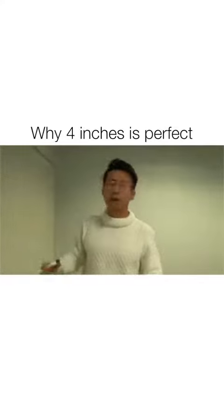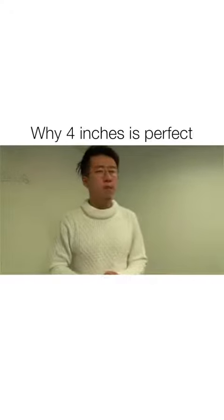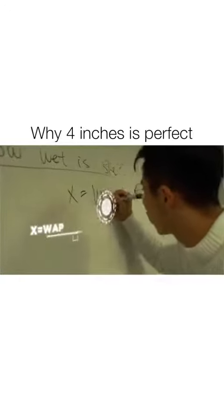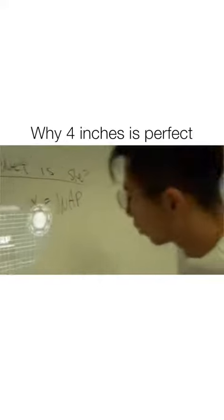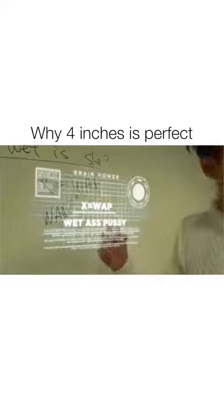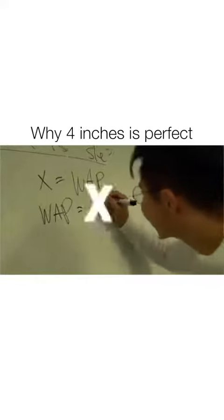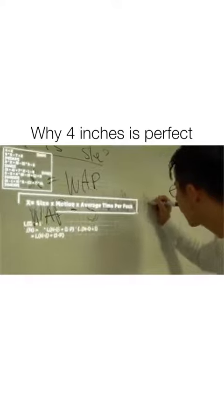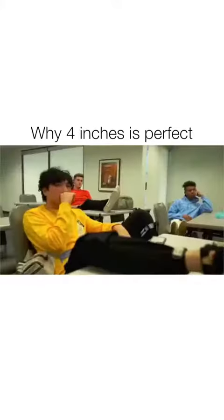So here today we're gonna solve for X, which is WAP. Stands for wet ass pussy. The formula for WAP is size times motion times average time per buck.